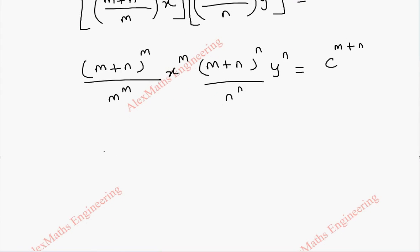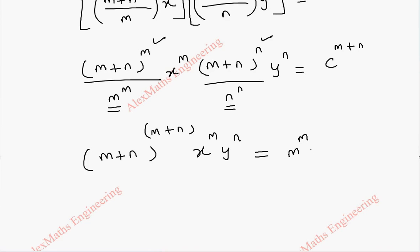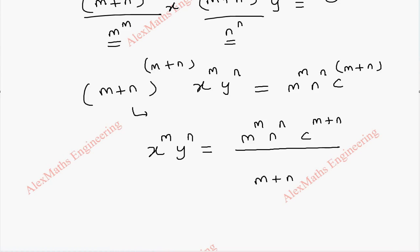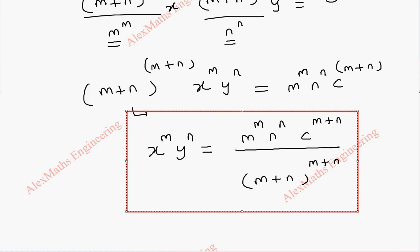We can add these two powers of (m+n), giving (m+n)^(m+n). Then x^m · y^n, and the terms m^m and n^n are taken to the other side. So finally, the required equation of the envelope is: x^m · y^n = m^m · n^n · c^(m+n) / (m+n)^(m+n).